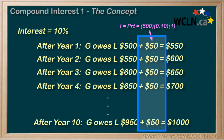So Linda realizes that simple interest is not very fair for these longer-term loans. To be more fair, Linda realizes that they should update the amount that Jerry owes at the end of each year. This is compound interest — updating the amount owed on a regular basis to better represent the money that the borrower is currently holding on to.